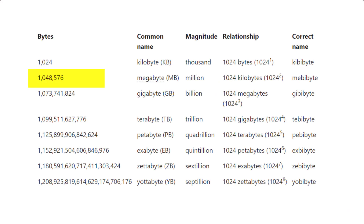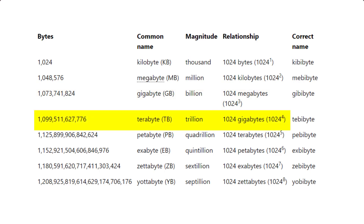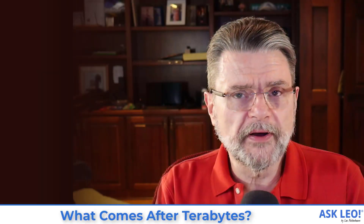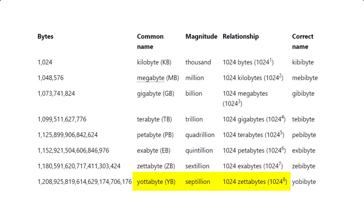A megabyte is 1,048,576 bytes — its magnitude is a million and it's 1,024 to the second power. A gigabyte, roughly a billion bytes, is 1,024 to the third power. A terabyte, a trillion bytes, is 1,024 to the fourth power. Beyond that, we have the petabyte — a quadrillion bytes — the exabyte, a quintillion bytes, the zettabyte, a sextillion bytes, and the yottabyte, a septillion bytes or 1,024 to the eighth power.